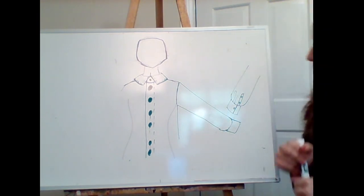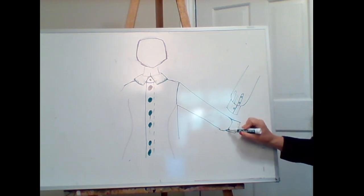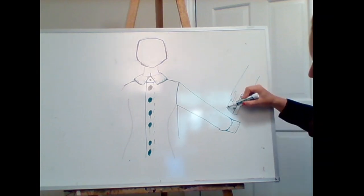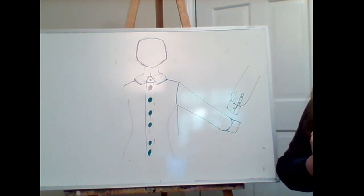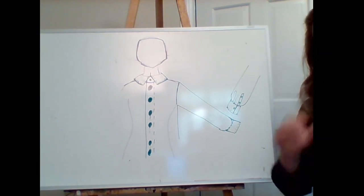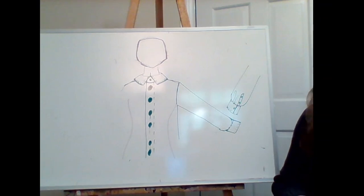Same thing happens on our cuffs — for the most part, we're going to have top stitching on the top and bottom of our cuffs to help keep stiffness and shape, and also to help in finishing.